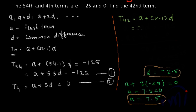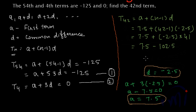So from here we will get 7.5 plus -2.5 multiplied by 41 and this will be equal to 7.5 minus 102.5. And this will be equal to -95. So the 42nd term that is t42 is equal to -95.